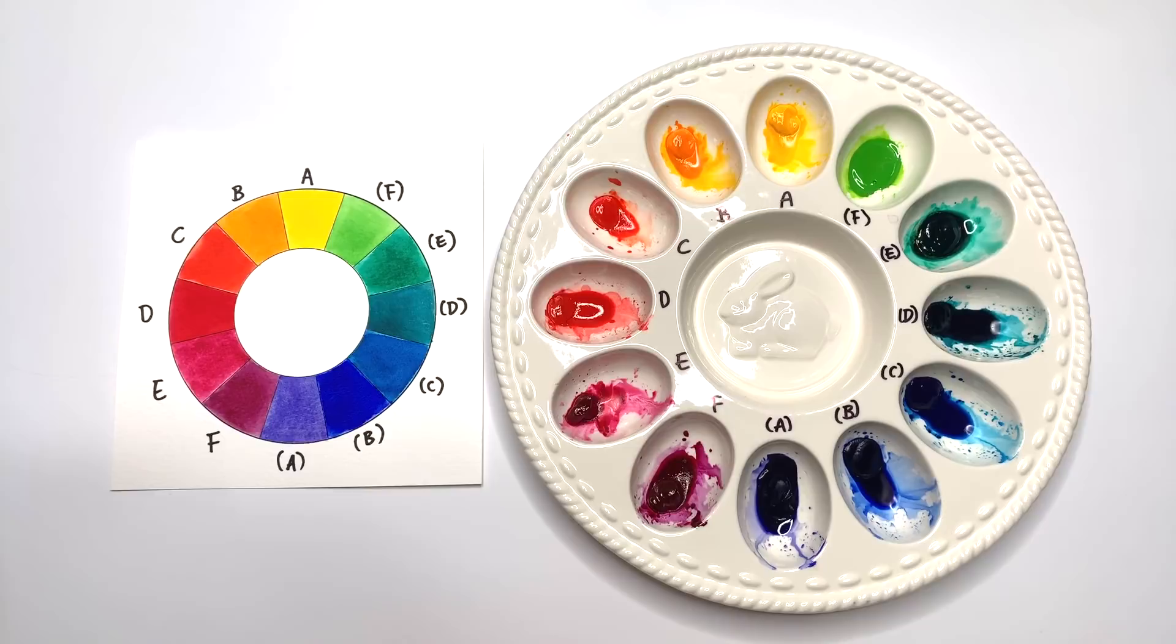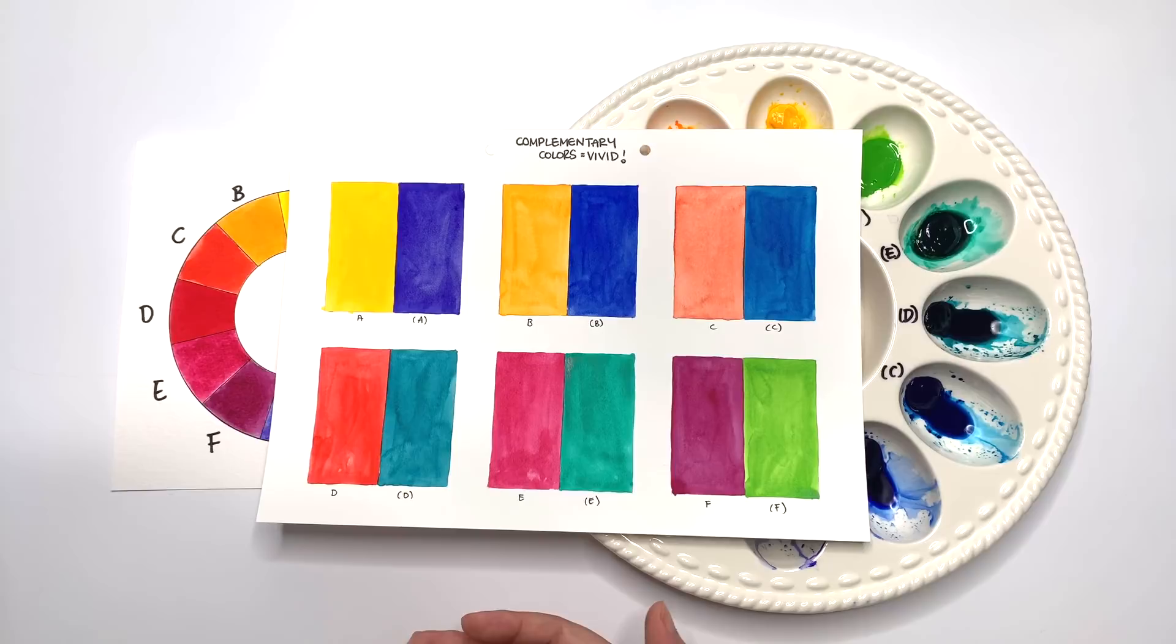In color schemes, complementary colors get talked about a lot because complementary colors make the most vivid pair of colors. That's because the two colors in a complementary pair are the most different from each other in the color wheel. The hottest color and the coolest color are a pair, and that's where we probably heard a lot about complementary colours.